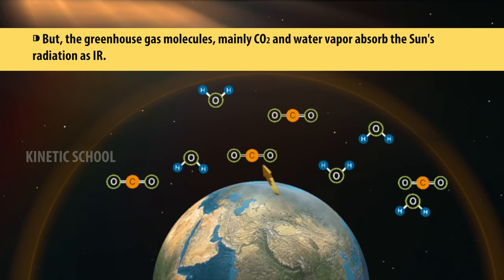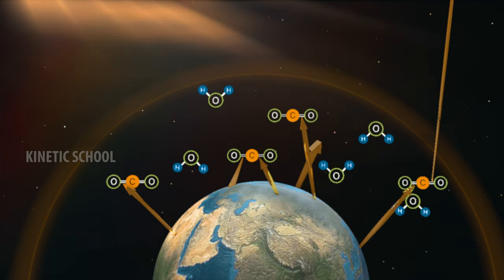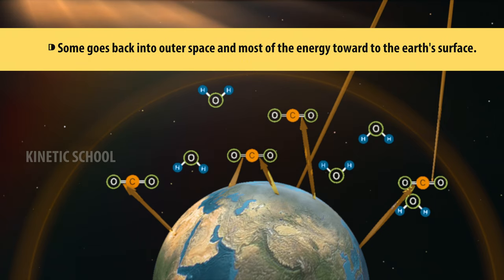But the greenhouse gas molecules, mainly carbon dioxide and water vapor, absorbed the sun's radiation as infrared. Some goes back into outer space, and most of the energy toward the Earth's surface.